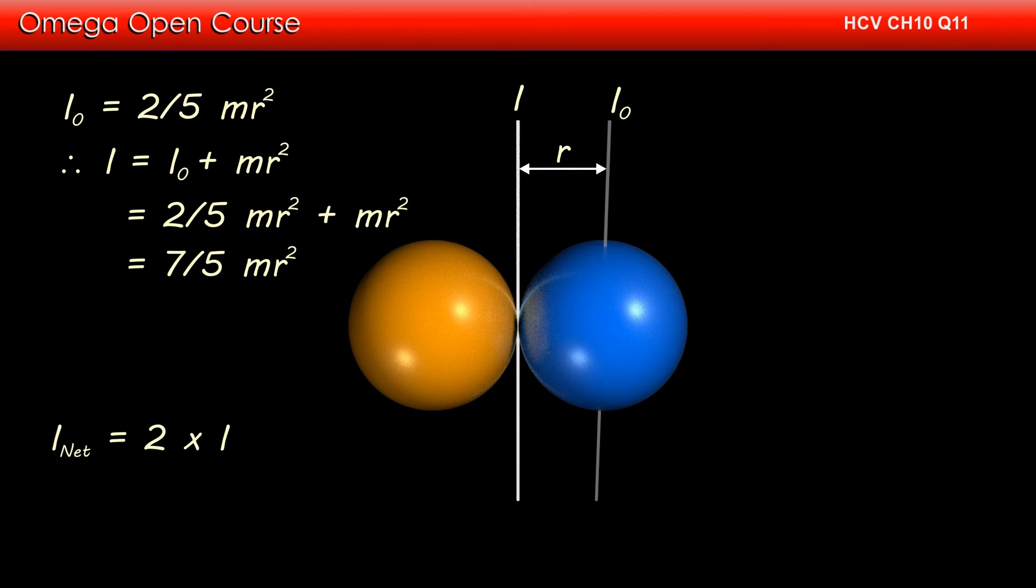Since both the spheres are identical, the moment of inertia of the other sphere about this axis must be the same. Thus, the net moment of inertia of the system is 2 times I, or 14/5 mr². This is our answer.